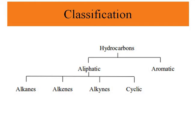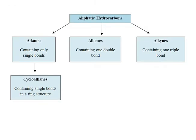We also have aromatic rings, and compounds with these are classified as aromatic hydrocarbons. One of the most common aromatic hydrocarbons is benzene. As shown in these slides, aliphatic hydrocarbons are classified as alkanes (single bonds only), alkenes (one double bond), alkynes (one triple bond), and cycloalkanes (single bonds in a ring structure).